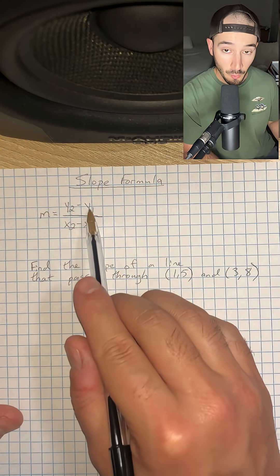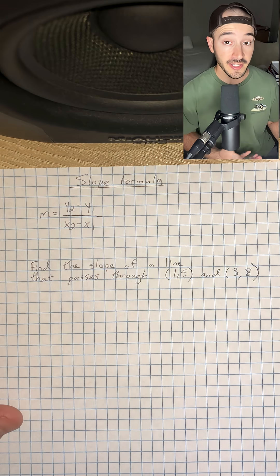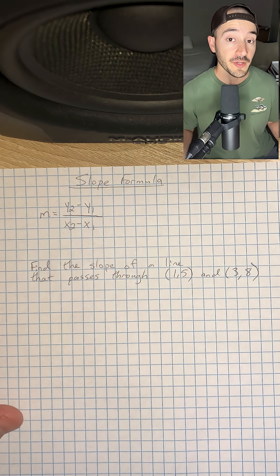Okay, so the x and the y's come from our coordinate pairs that were either given in the problem or that we find on a graph.